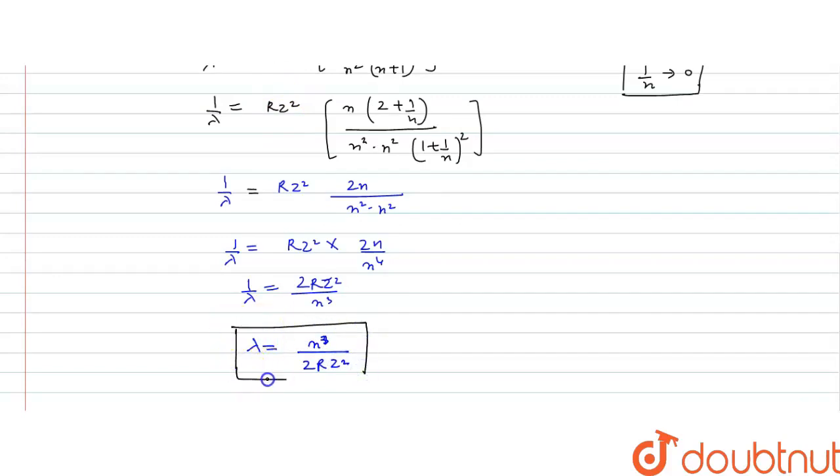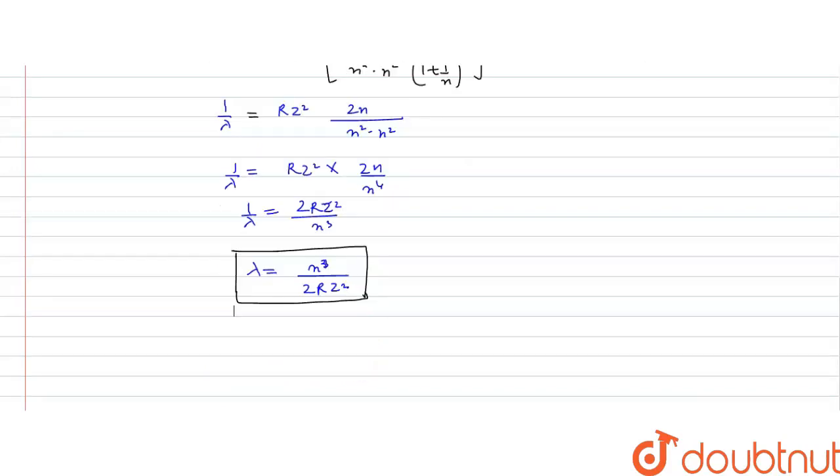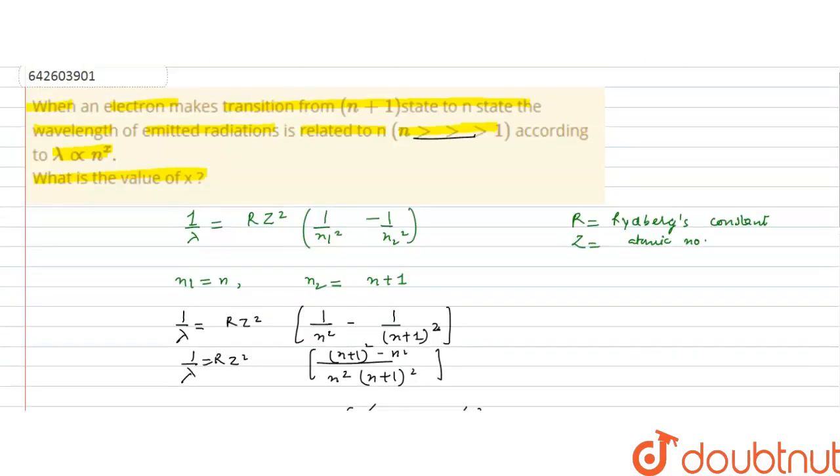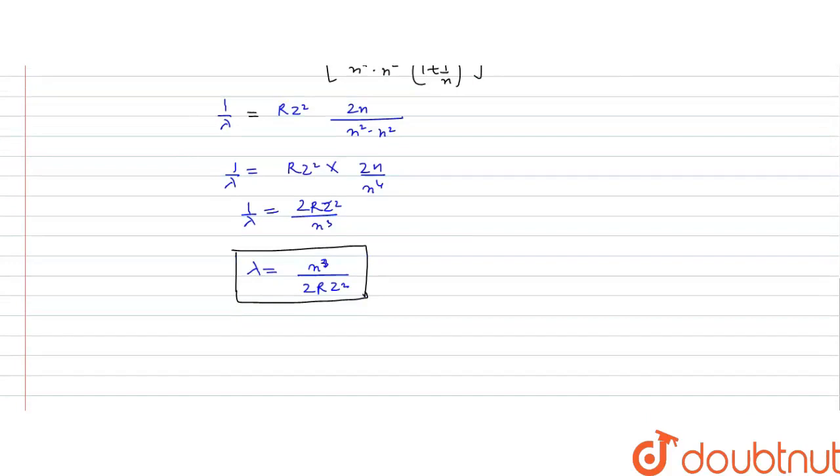Now, in the question, it is given that lambda is related to n to power x. Lambda is related to n to power x. Now, we have n to power cube. Lambda is n to power cube, it means x is 3.